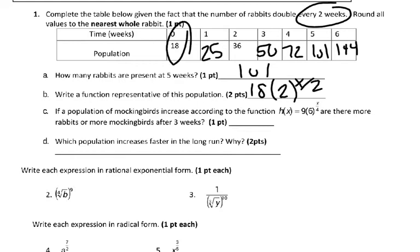Then ask for mockingbirds given the function h of x. Well in this problem all we do is take 3 because of 3 weeks and put it where x is and you end up getting 34 mockingbirds. And then the one that has more at 3 weeks. If rabbits has 50 and mockingbirds has 34 our answer would be rabbits. However, mockingbirds has a higher growth rate. So in the long run mockingbirds would beat out rabbits due to that fact.